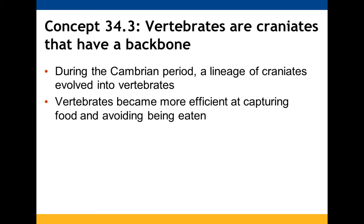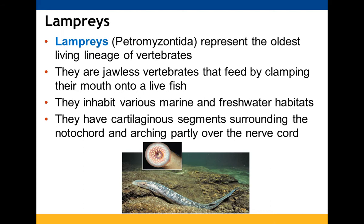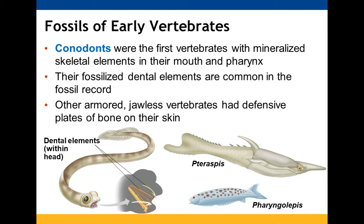Vertebrates are craniates with vertebrae. Lampreys are among the oldest living lineages of vertebrates — jawless vertebrates. They have cartilage segments around the notochord. Early vertebrate fossils show the first vertebrates had mineralized skeletal elements. These fossilized elements are common in the fossil record.